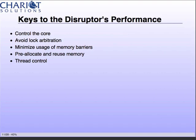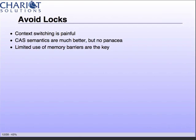The keys to the disruptor's performance: control the core — lock something to a core and execute and never let go, so it never has to pull data out of a local cache and bring in new data for another thread. Avoid lock arbitration, which goes back to the kernel, releases a core, arbitrates who gets access to what, and may give you back your thread on a different core. Minimize the usage of memory barriers — that's where you're saying a data element is volatile. Preallocate and reuse memory, and control your threads.